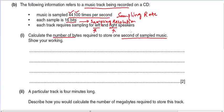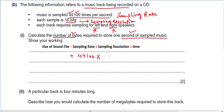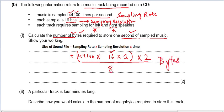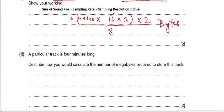Using the formula: sampling rate is 44,100, sampling resolution is 16 bits, and time is one second. That gives the size for one speaker, but we have two speakers so we double it. Since the sampling resolution is in bits, to convert to bytes we divide by 8. That gives us the file size in bytes for one second of stereo audio.